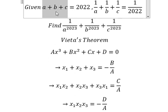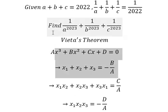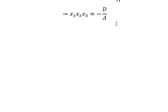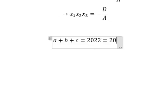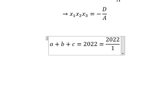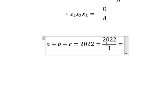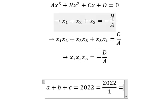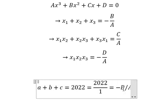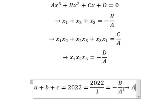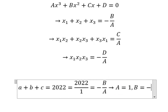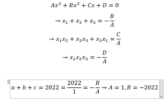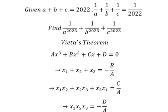Now in this one we have a plus b plus c — there are three solutions of this one. We have 2022, that means we have 2022 divided by number one. So a equals to number one, b equals to negative 2022.